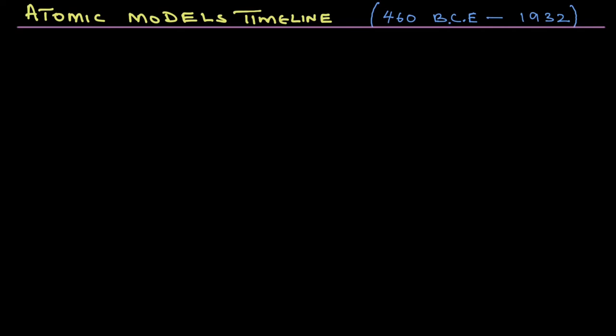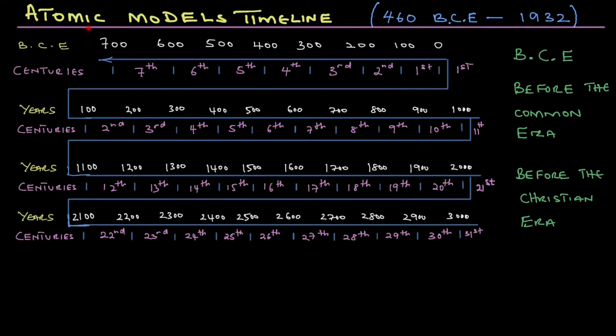Atomic Models Timeline from 460 BCE to 1932. Introducing the timeline, BCE stands for before the common era or before the Christian era. Sometimes it's referred to as BC, before Christ, or before the birth of Jesus Christ. 700 down to 600 is the 7th century, then 600 down to 500 is the 6th century, and all the way down from 100 to 0 is the 1st century. The new era began from 0 to 100, that's the 1st century. We're now in the 2000 to 2100, so we're in the 21st century now.